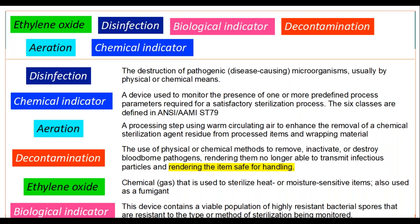Now, biological indicators — remember, this is the one you do not want to confuse with the chemical indicator. A biological indicator is a device that contains a viable population of highly resistant bacterial spores that are resistant to the type or method of sterilization being monitored. The word 'bio' means life — something living. So you're using a viable population of bacterial spores for biological indicators.